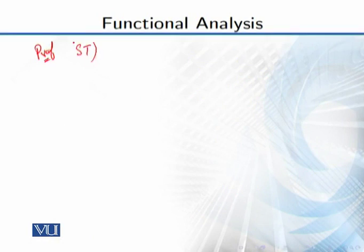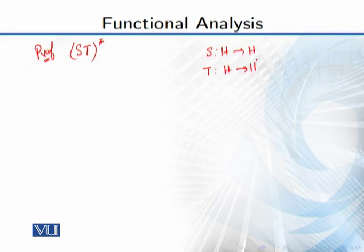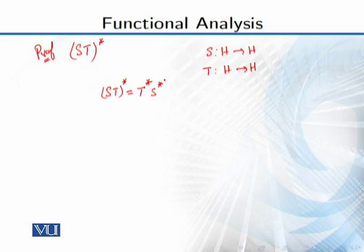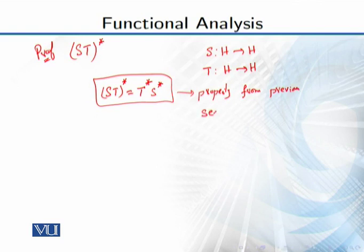Now the proof. We are interested to see the Hilbert adjoint operator of the product of S and T. S is an operator from H to H and T is an operator from H to H. We recall from a previous section that the adjoint of the product (ST)* is equal to T* S* — that is, t-star and s-star. This is a property we already established.